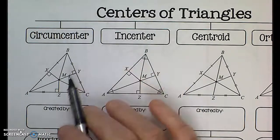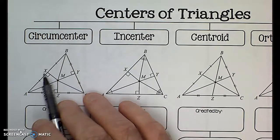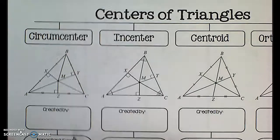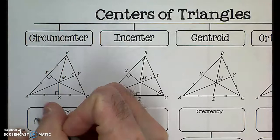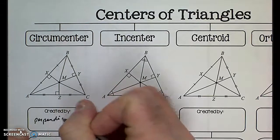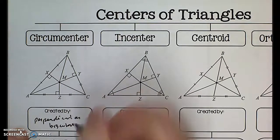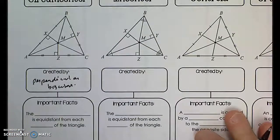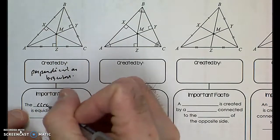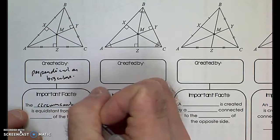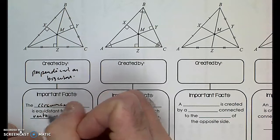So the first center that we created was the circumcenter, and we created it using perpendicular bisectors. That's what we're going to write down — this is just an overview, a page that gives you an overview. The circumcenter is equidistant from each vertex. That's what we learned.